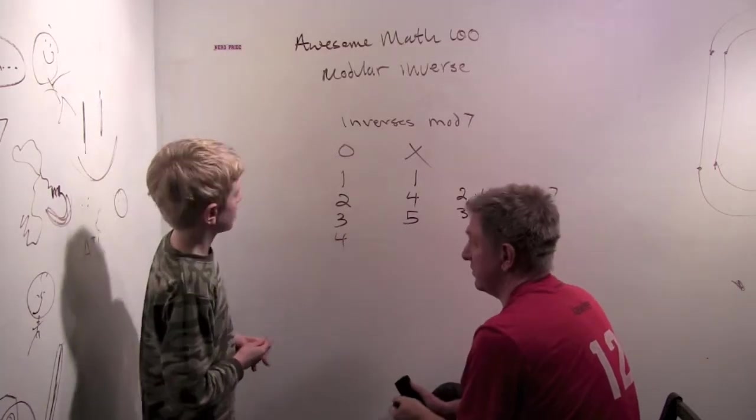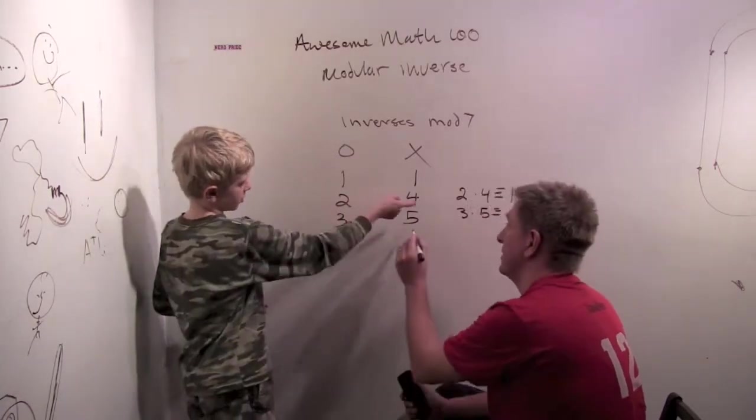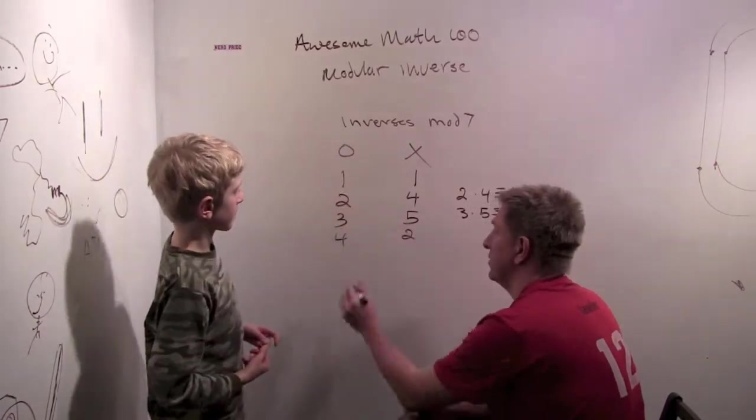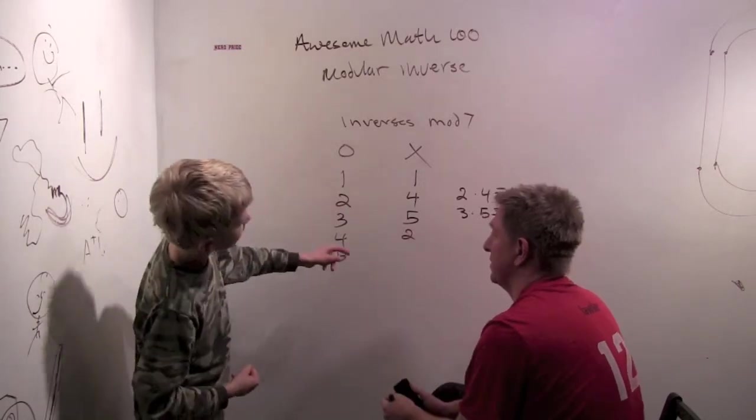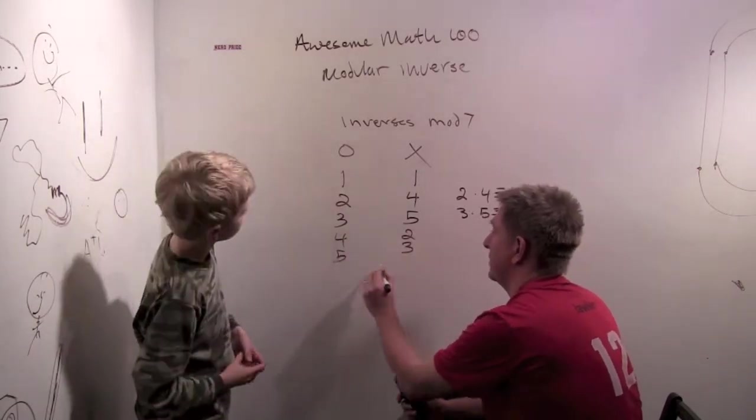Now what about four? What's the multiplicative inverse of four? It would be two since you just flipped the digits over. What about five? Five would be three.